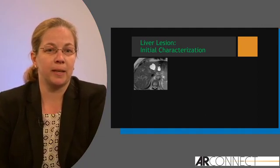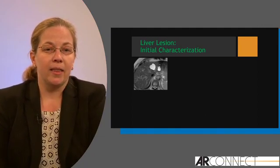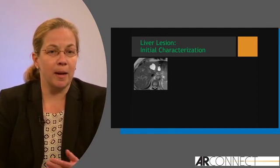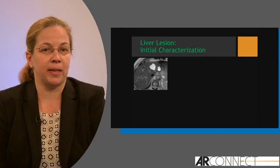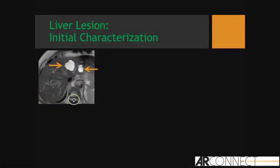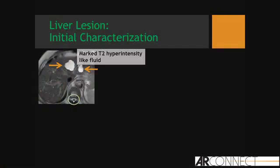When we look at our T2-weighted images, there is some information we can gather from T2-weighted hyperintensity. For instance, this lesion here has marked T2 hyperintensity that's like fluid, and so I feel comfortable calling this a cyst.